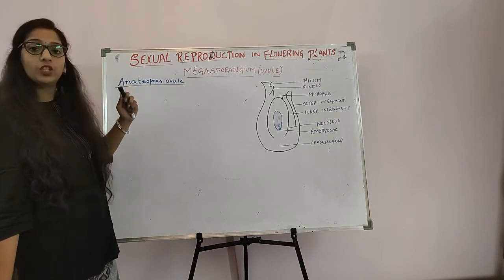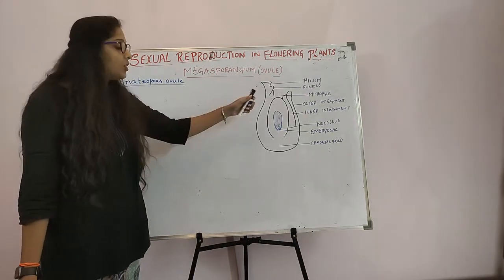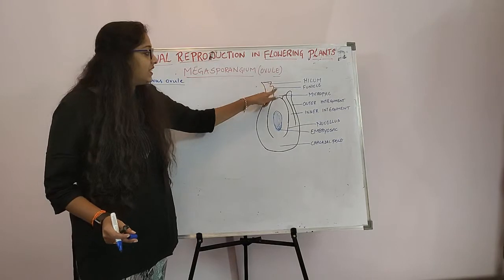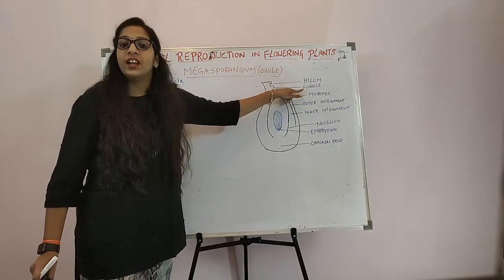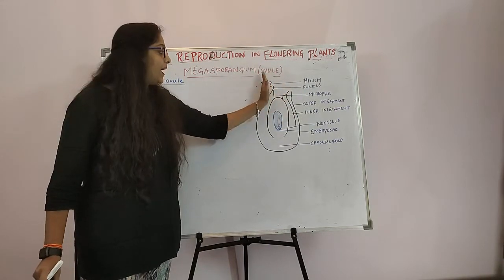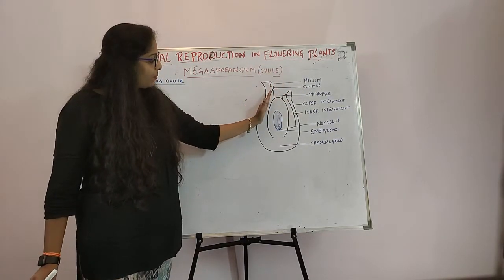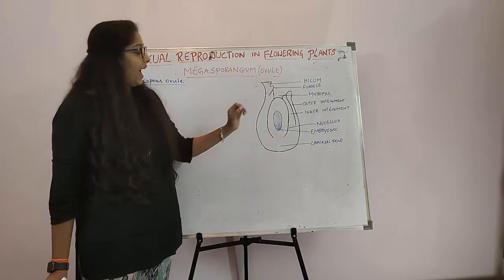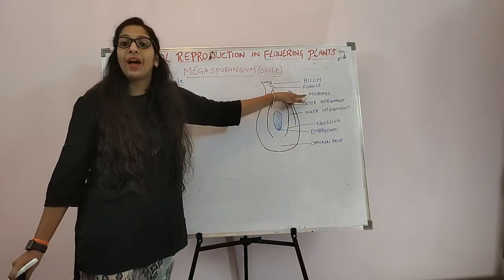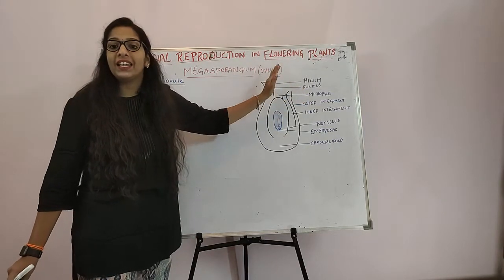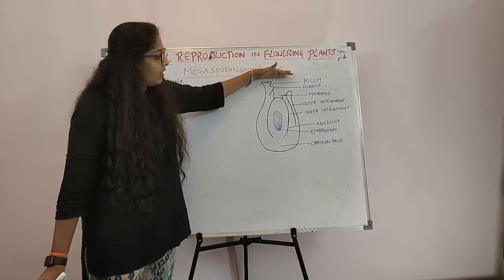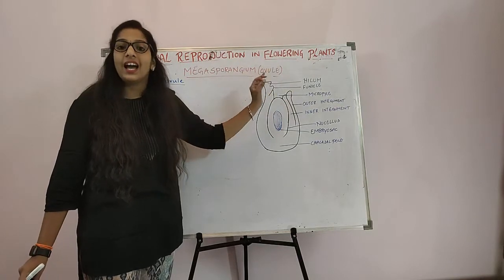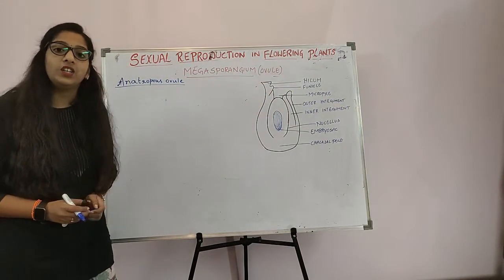Anatropous Ovule means it is a kind of ovule in which the funicle region is bent back on itself — you can see the shape here. The funicle region is bent back on itself, and this region is known as the Micropyle region. This Micropyle is facing the Placenta. This kind of ovule is known as Anatropous Ovule.